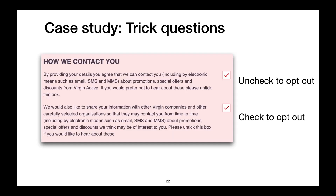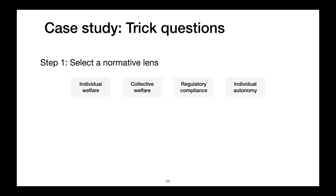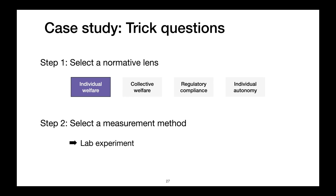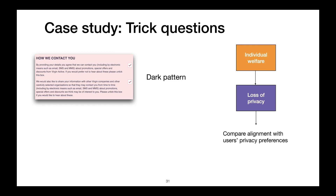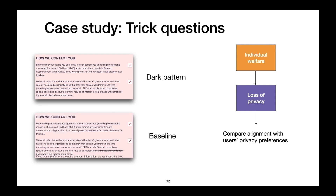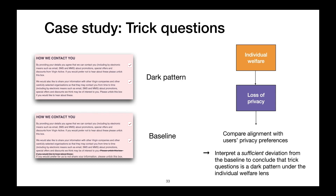So how can we use this framework to analyze dark patterns? Consider the trick questions user interface described at the beginning of this talk. We start by selecting a normative lens — say the individual welfare lens — and then select a measurement method, say a lab experiment. Under the individual welfare lens, we select a specific kind of welfare to measure; here, that may be a loss of privacy. We then select a metric such as examining users' privacy preferences, and contextualize it by comparing it to a baseline — for example, the trick questions dark pattern without the actual trick. We could then interpret a sufficient deviation from the baseline to conclude that trick questions is in fact a dark pattern under the individual welfare lens.